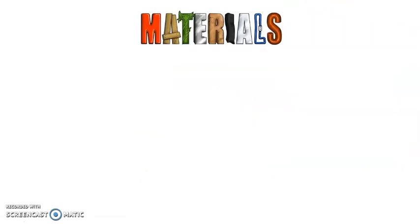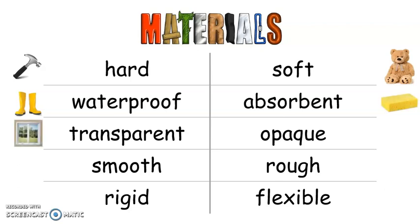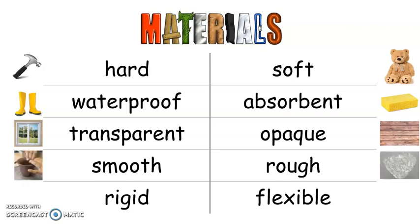First, I'm sure you remember we learned about some properties of materials. Materials can be hard or soft, waterproof or absorbent, transparent or opaque, smooth or rough, rigid or flexible.